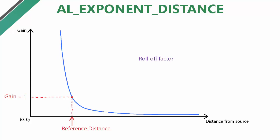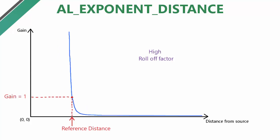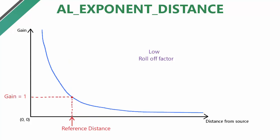The roll-off factor determines how quickly the gain decreases as the distance increases, and this is also the case for the other distance models. The higher the roll-off factor, the steeper the curve will be, and therefore the quicker the volume of the sound will decrease as you move away from it. If you want the sound to be able to be heard from a long way away, then you would decrease the roll-off factor so that the gain doesn't decrease as quickly.